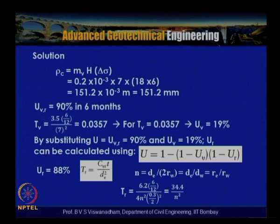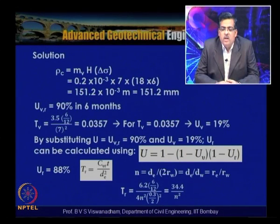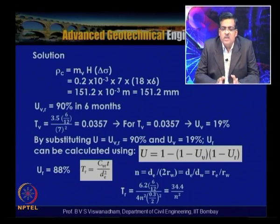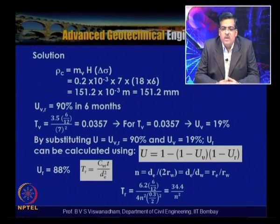The solution begins by calculating the final consolidation settlement ρ_c, which works out to 151.2 mm, while only 20 mm of settlement is permitted. So the desired degree of consolidation is (151.2 − 20)/151.2. Taking U_VR as 90% in 6 months, with clay thickness of 7 m under single drainage, T_v = (C_v × t)/H² = (4.5 × 6/12)/7² = 0.0357.